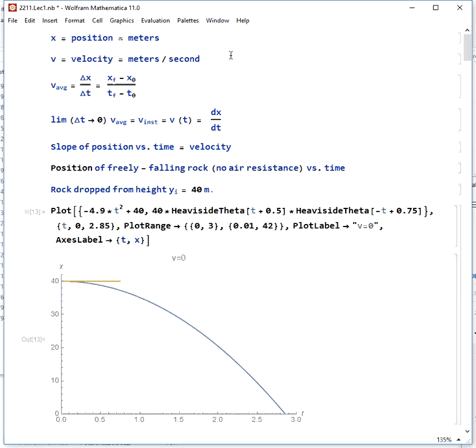The most basic part of the beginning chapter, which is kinematics, starts with position. This is just the location of an object. We usually use the variable x, and it's measured in meters.